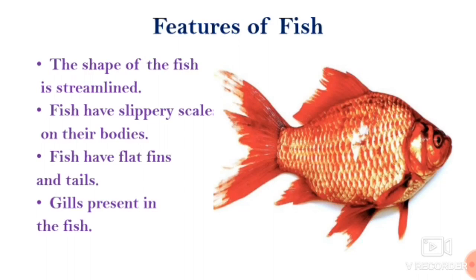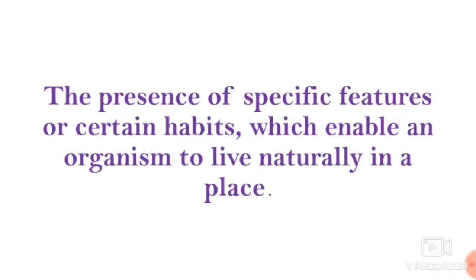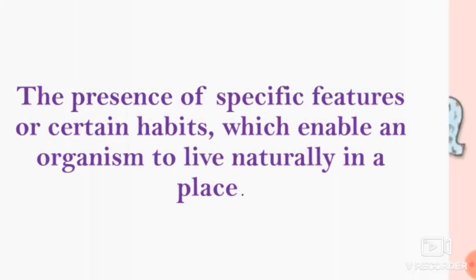Now you have seen some features of camel and some features of fish. We can see that these features in all kinds of animals are adapted to living in their surroundings. The presence of these specific features, or certain habits, enable an organism to live naturally in a place. We have taken two examples from a wide variety of animals — one is camel, one is fish — and plants that live on the earth. This is called adaptation.